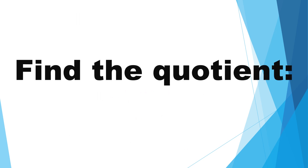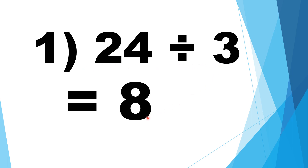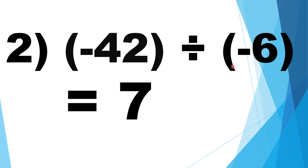Find the quotient. Number 1: positive 24 divided by positive 3. Positive and positive are like signs, so the sign of the quotient is positive. Positive 24 divided by positive 3 is equal to positive 8. Number 2: negative 42 divided by negative 6. Negative and negative are like signs, so the sign of the quotient is positive. Negative 42 divided by negative 6 is equal to positive 7.